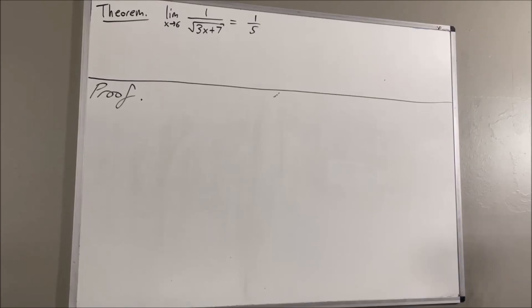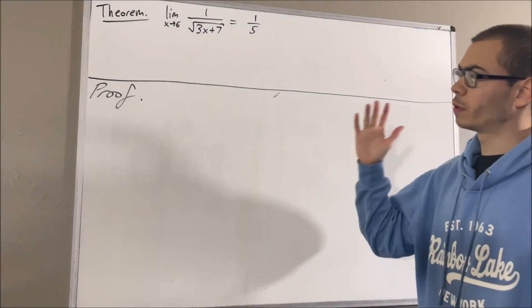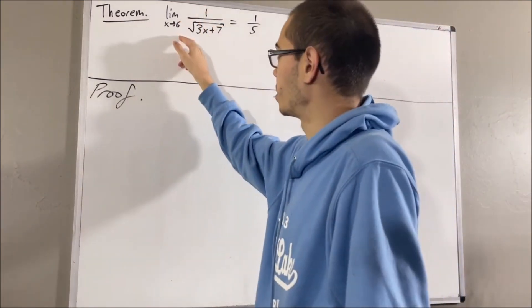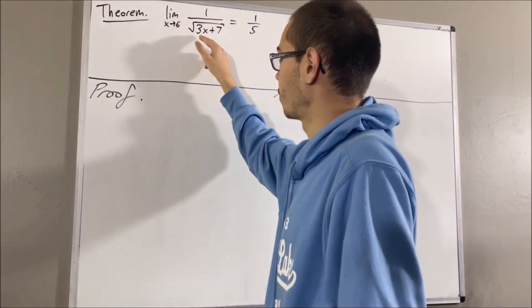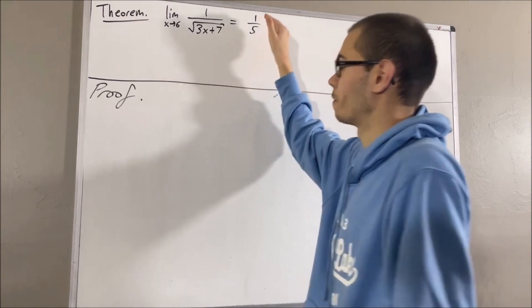Hello! In this video, we are going to prove the following theorem: the limit as x approaches 6 of 1 over the square root of 3x plus 7 is equal to 1 fifth.